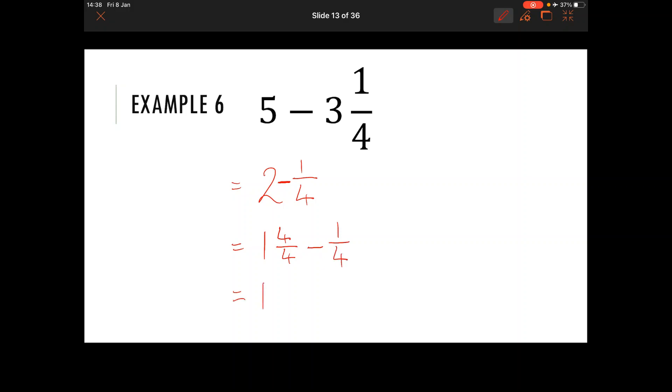And just so that you can visualise what we did there, if we have two whole cakes or pizzas and they are split into quarters and I subtract one of those quarters, I've got one whole cake or pizza left and the three quarters which matches our answer over here.